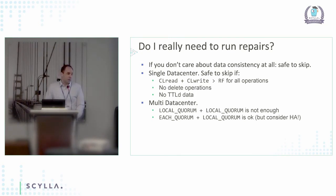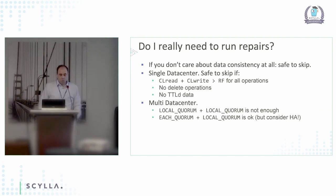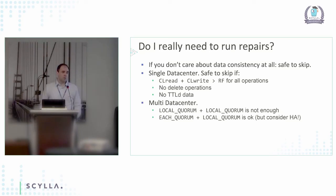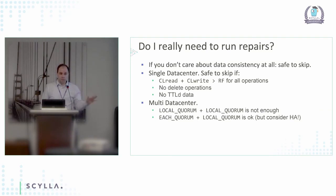The first scenario where you can skip repair is if you truly don't care about data consistency — many applications, like complex machine learning ones, tolerate a little wrong data. Second, if you run a single data center it is safe to skip repair if the consistency level for reads plus the consistency level for writes is greater than the replication factor — the classic example being quorum plus quorum. However, if you have deletes or TTLs — TTLs are just deletes done automatically — you cannot skip repairs. If you have no deletes and no TTLs and always do majority write plus majority read, it's fine.